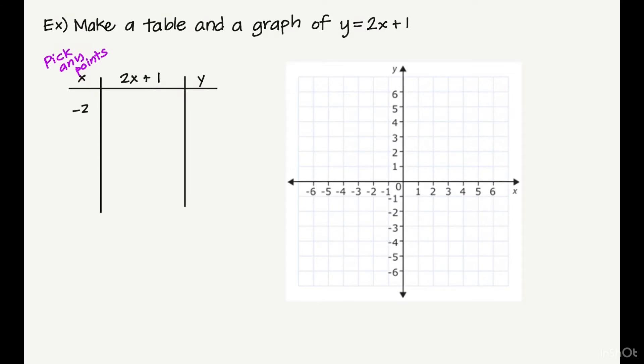I'm going to pick negative 2, negative 1, 0, 1, and 2. One at a time, I'm going to plug it in to find out what the y would be. That's negative 4 plus 1, which is negative 3. Two times negative 1 is negative 2, plus 1 is negative 1. Two times 0 is 0, plus 1 is 1. Two times 1 plus 1 is 3. And then 2 times 2 is 4, plus 1 is 5.